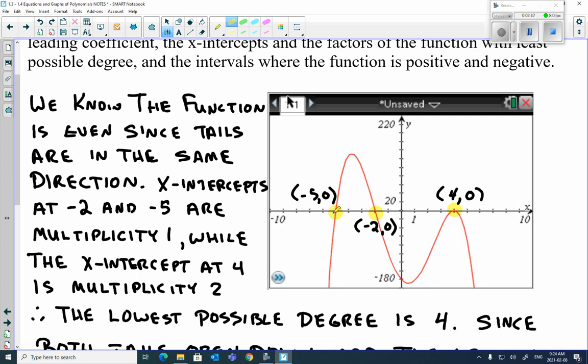So this is a 1, this is a 1, but this bounce at 4, 0, it's going to be a multiplicity of 2 because it bounces there. So the lowest possible degree for this whole thing is 4. It's an even one.